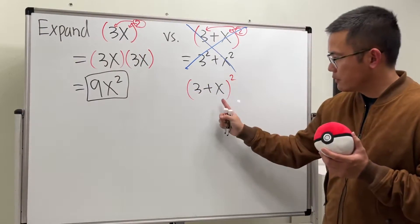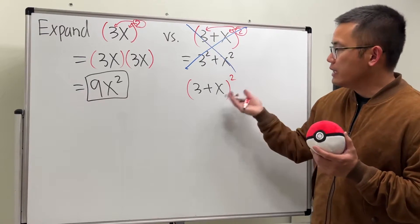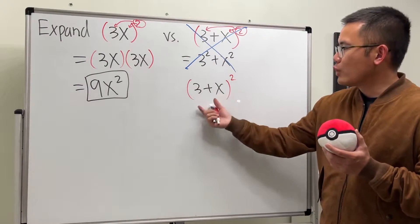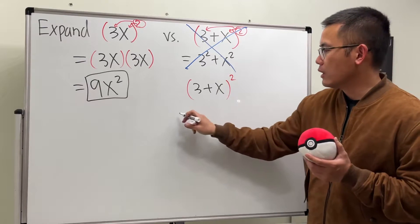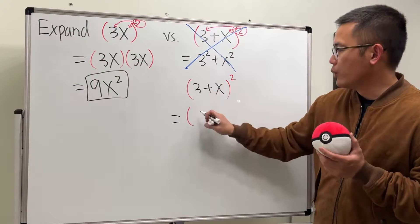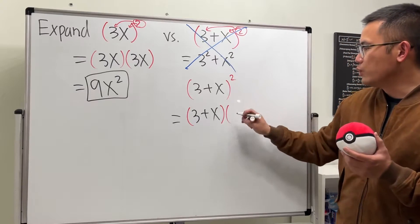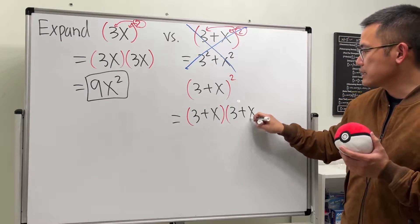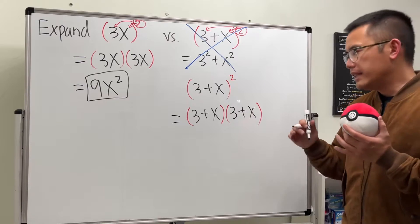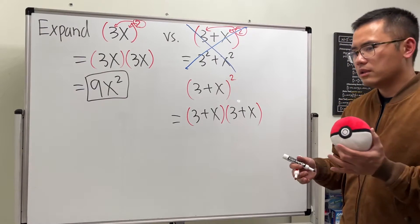This right here is just one term. Well, for this, what do we do? Again, use the same idea. We're going to write this down twice, so we're going to have parentheses with 3 + x, and then another parentheses with the same thing inside, 3 + x.